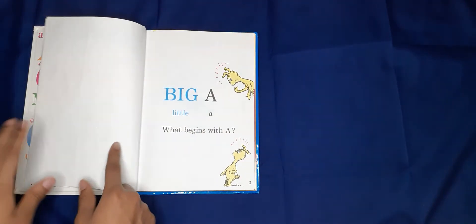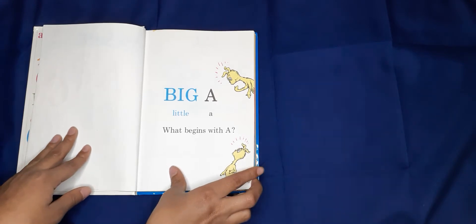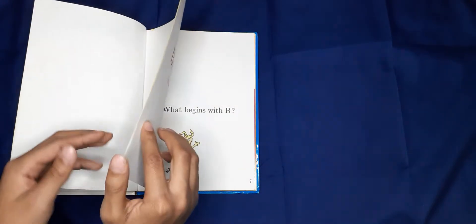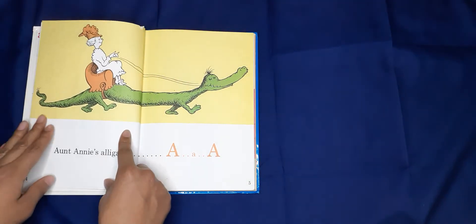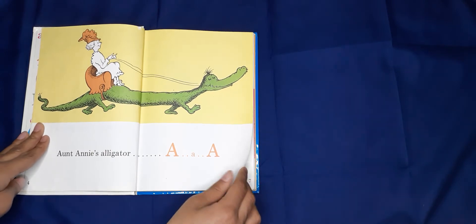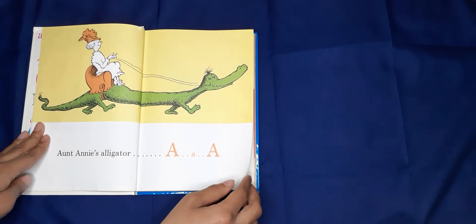Big A, Little A. What begins with A? Auntie Anne's Alligator. A, A, A.